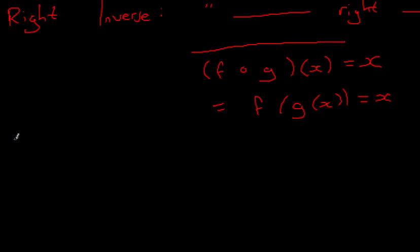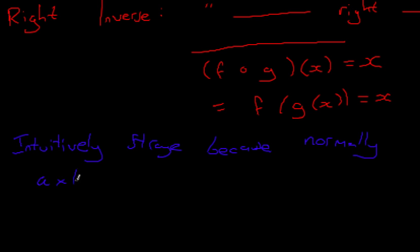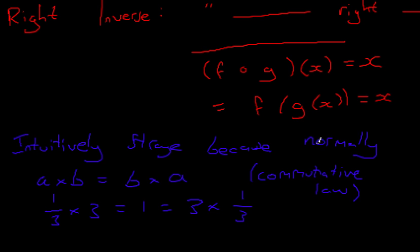Intuitively, this is not so obvious, intuitively strange, because normally, in the number systems that we're used to, a times b equals b times a. For instance, if you do like one-third multiplied by three, then this is one, but that's also equal to three times a third, right? The order doesn't matter, they commute. This is the commutative law.